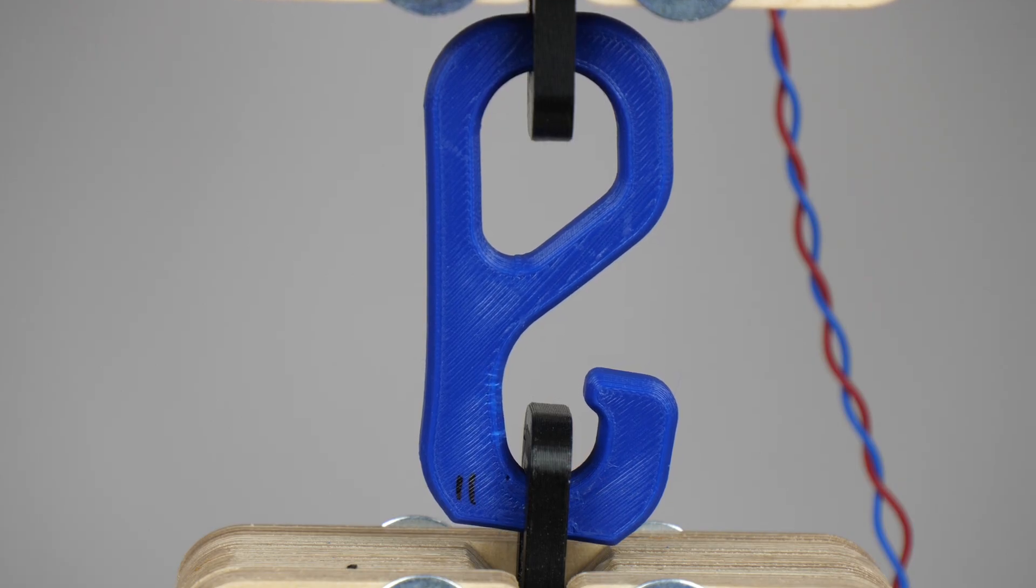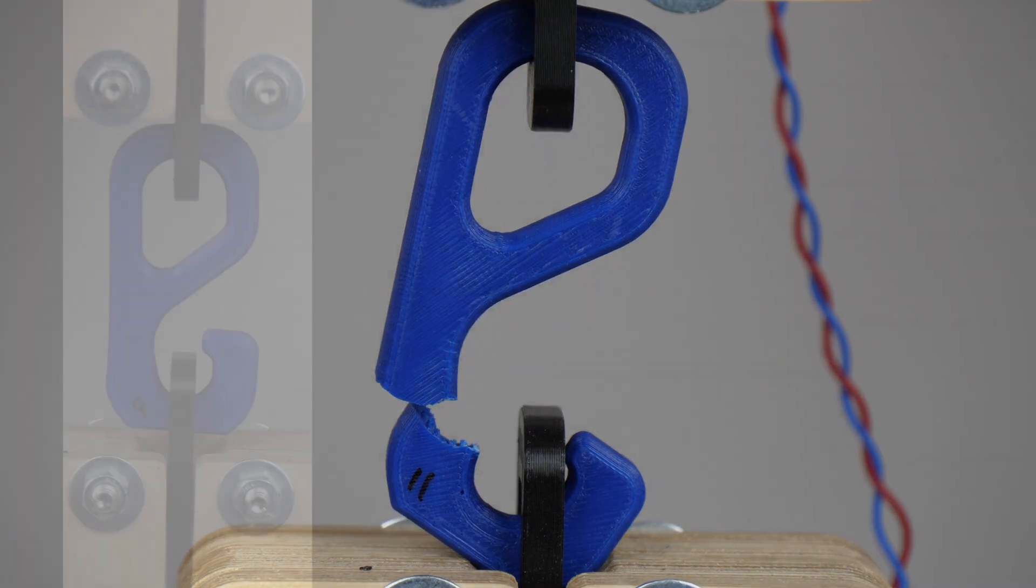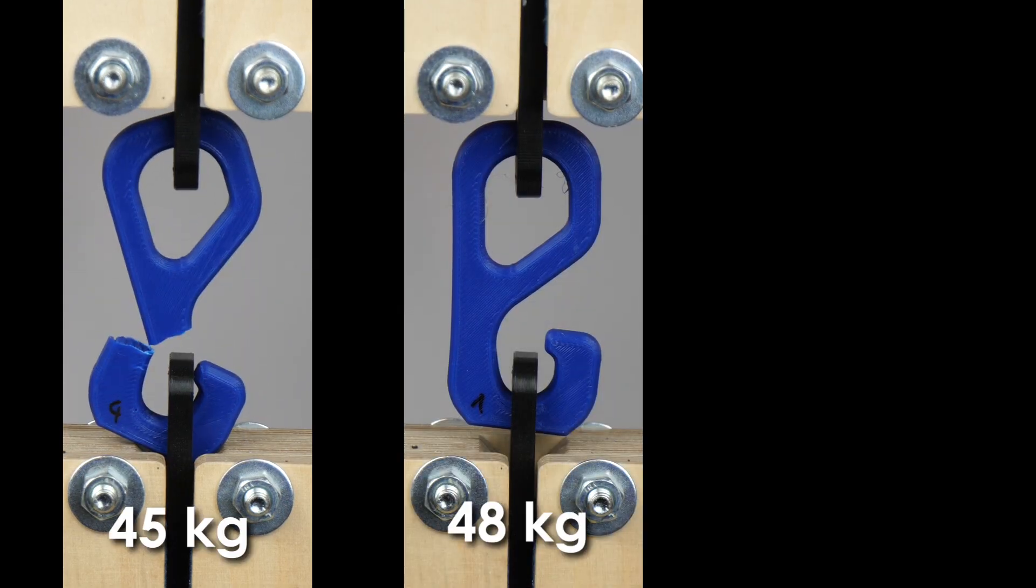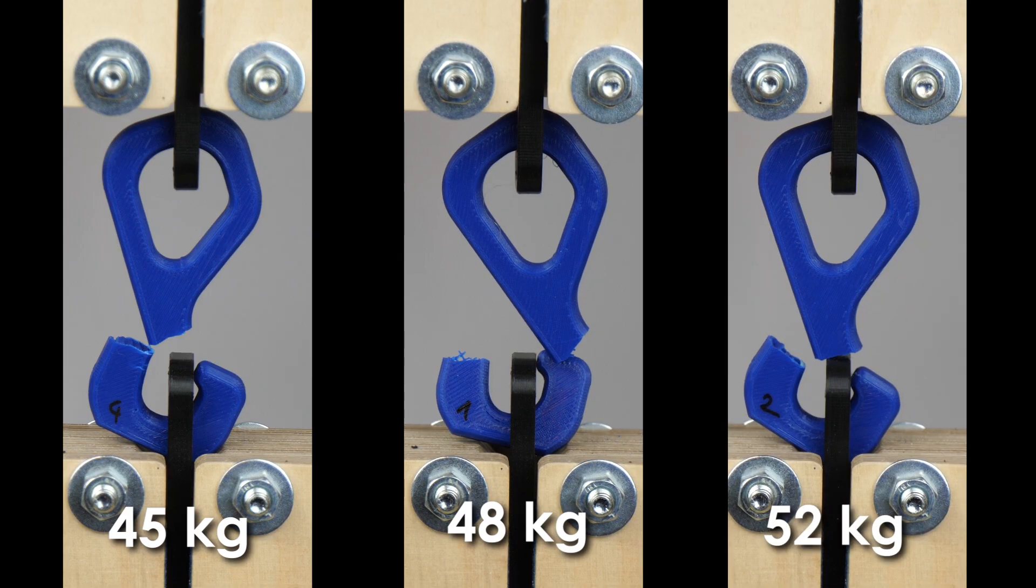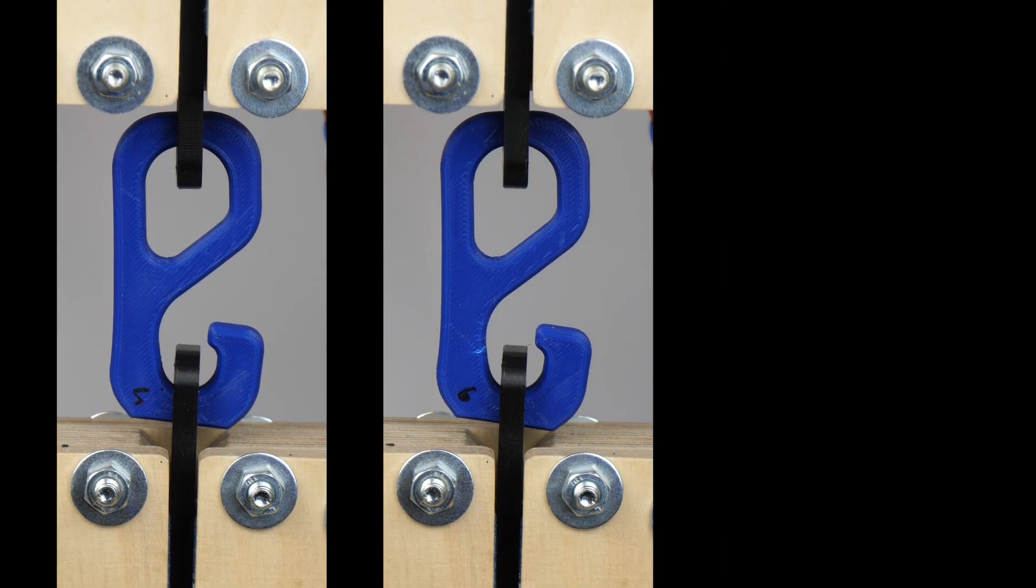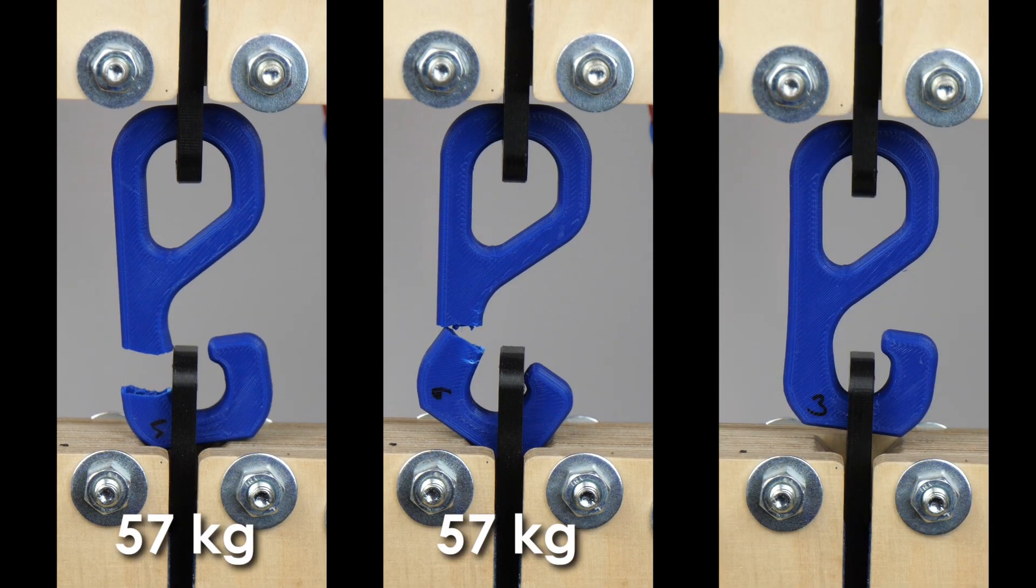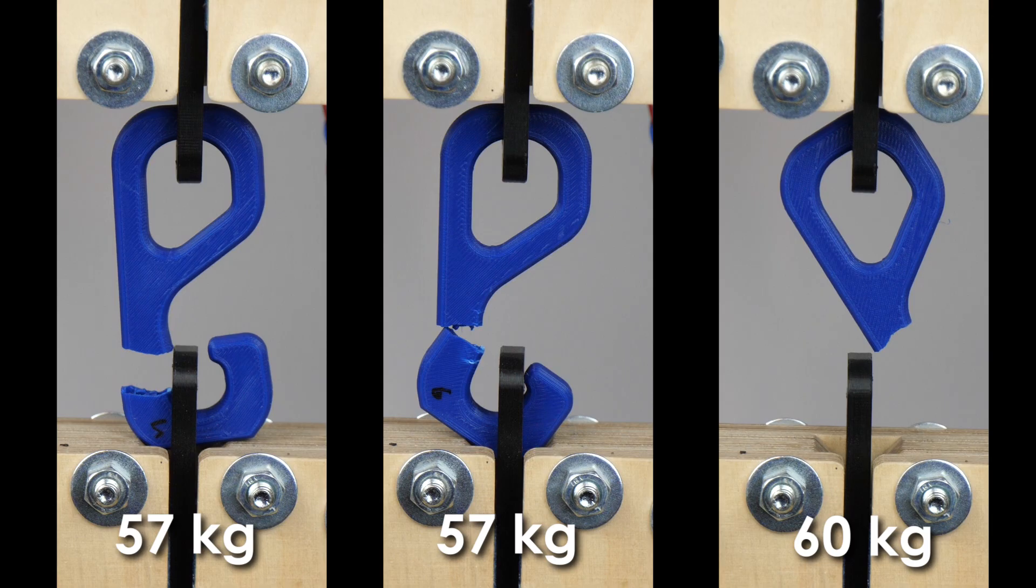But now to the most interesting part. What was the strength of the parts? As expected Wiggle did the worst with only 45kg until failure. Rectilinear came next and failed at 48kg. Then there was Grid with 52kg and both honeycomb patterns failed at 57kg. The hook with the triangular infill was the strongest, failing at 60kg.